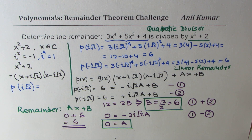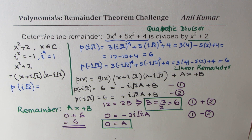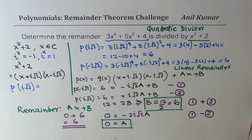So the remainder when 3x to the power of 4 plus 5x squared plus 4 is divided by x squared plus 2 is 6. I hope you like it. You may want to review the concept of complex numbers. Remember, every quadratic function can be factored in the domain of complex numbers, so you can extend to complex numbers and get the solution to such questions. Feel free to share it with your friends, like and subscribe, and thanks for posting this question. All the best.